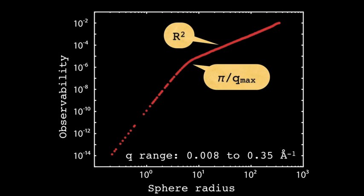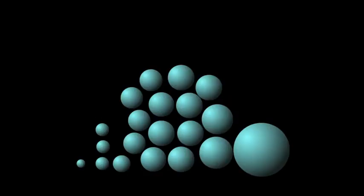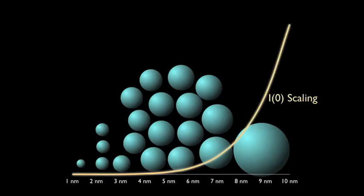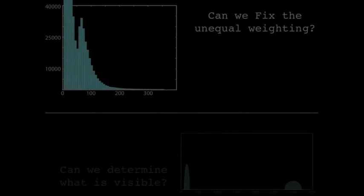Above pi over q_max we have the radius squared behavior of observability, and below this we have the radius to the sixth power as expected from volume scaling. This means that within your q limits, observability scales with radius squared. So while the intensity scales with radius to the sixth power, the observability scales only with radius squared — which is still unfavorable, but not as bad as the sixth power.